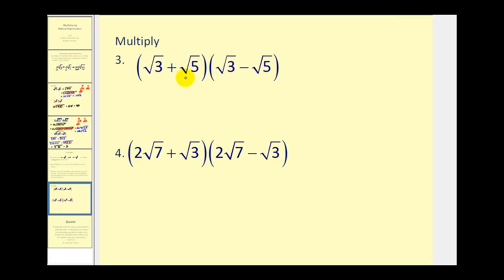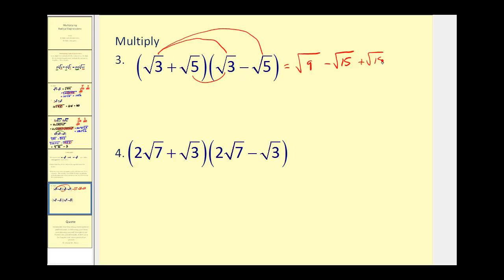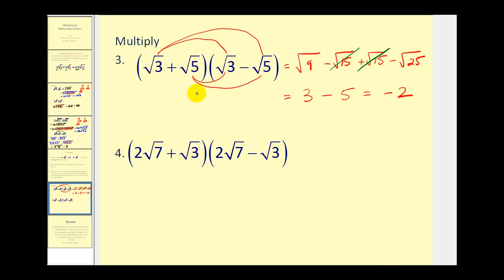Let's look at a couple of examples of multiplying conjugates together. We should notice these are conjugates because the terms are the same — one's a sum and one's a difference. Let's FOIL this out. Square root of 3 times square root of 3 is the square root of 9. Next, square root of 3 times negative square root of 5 is minus square root of 15. Then square root of 5 times square root of 3 is plus square root of 15. And positive square root of 5 times negative square root of 5 is minus square root of 25. These two middle terms are opposites, so the square root of 9 is 3 and the square root of 25 is 5, giving us negative 2. Notice how the square roots were eliminated.